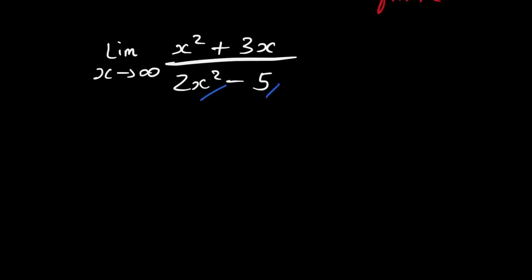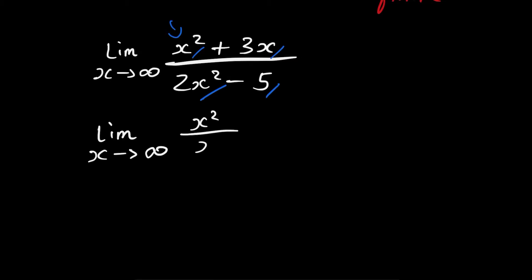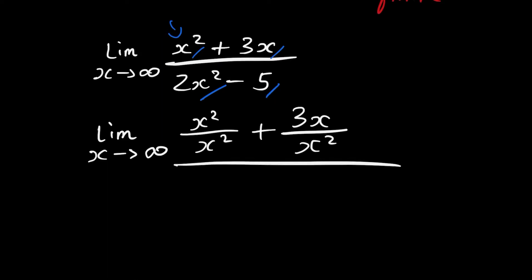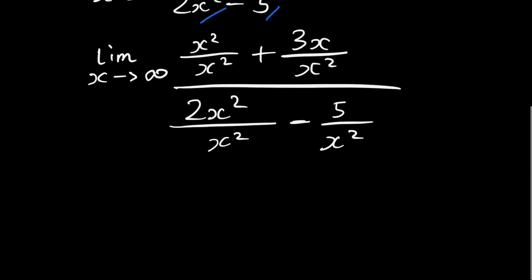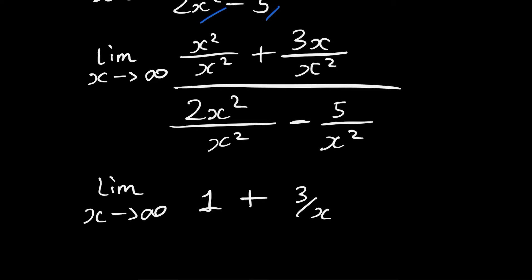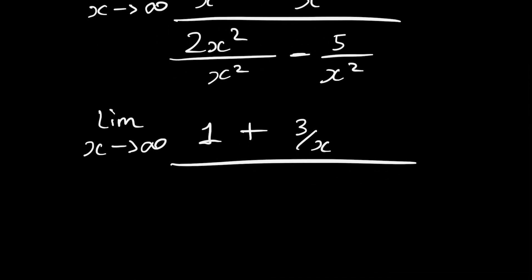How we solve this is by dividing all terms by x squared. So we get: limit x approaches infinity of x squared over x squared plus 3x over x squared, all divided by 2x squared over x squared minus 5 over x squared. After simplifying, this becomes: limit x approaches infinity of 1 plus 3 over x, divided by 2 minus 5 over x squared.